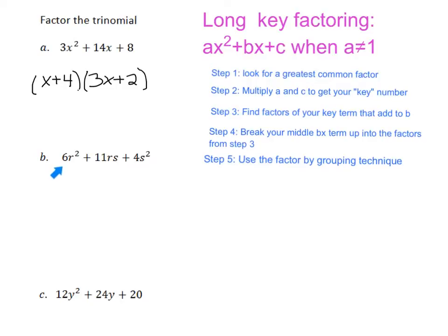Step one is to look for a greatest common factor. 6, 11, and 4 don't have anything. These two have R's, but this one doesn't. These two have S's, but this one doesn't. So there isn't a greatest common factor for this one. So we can go ahead and move to step two.